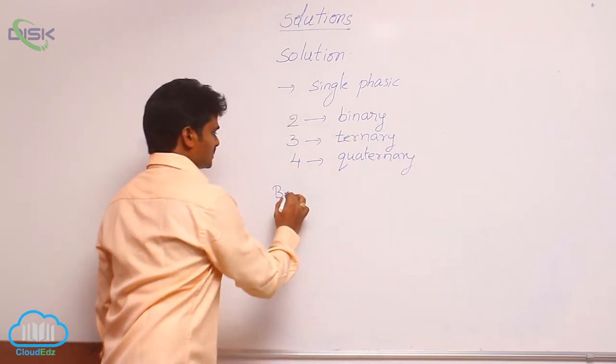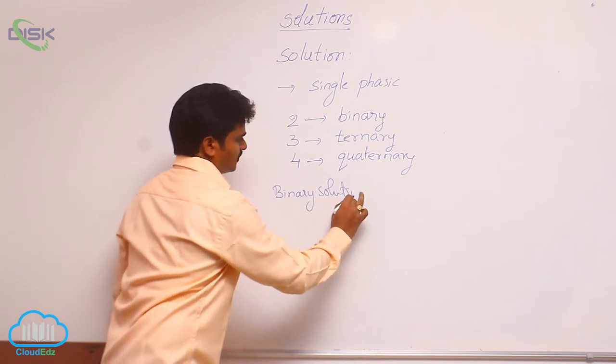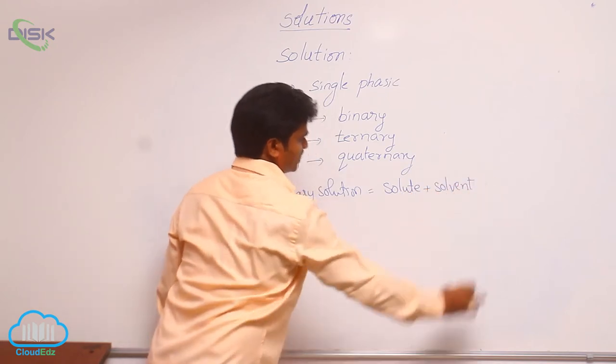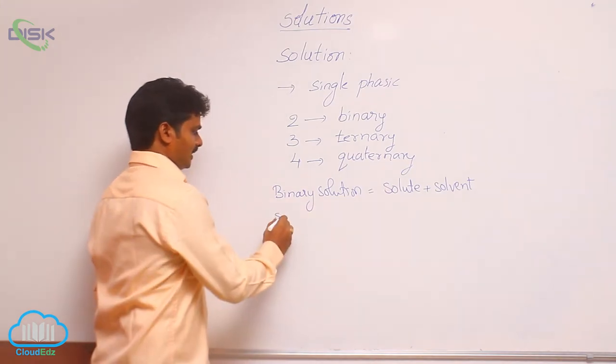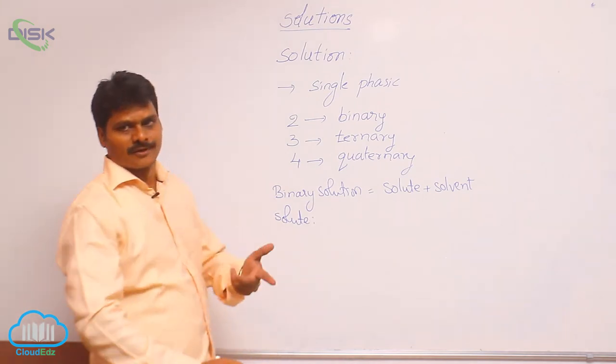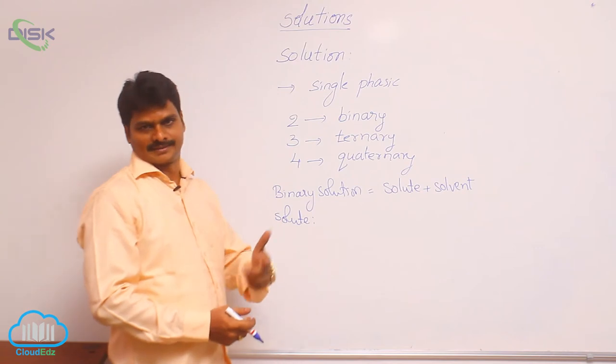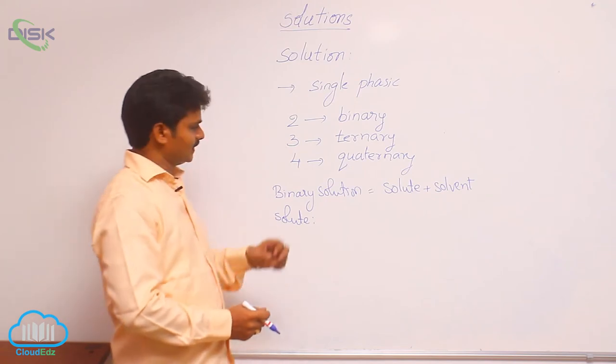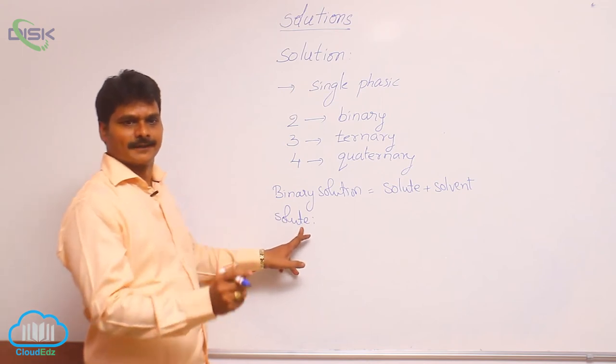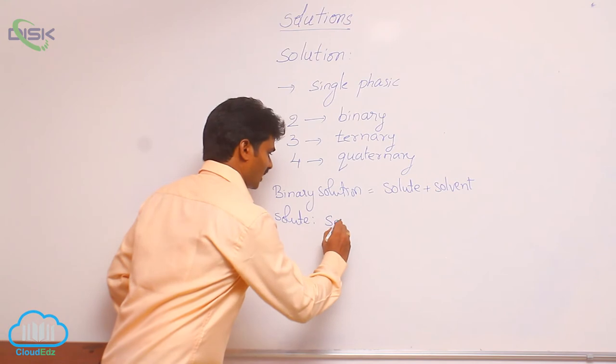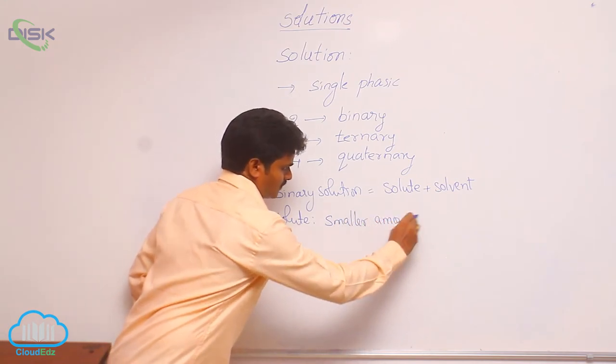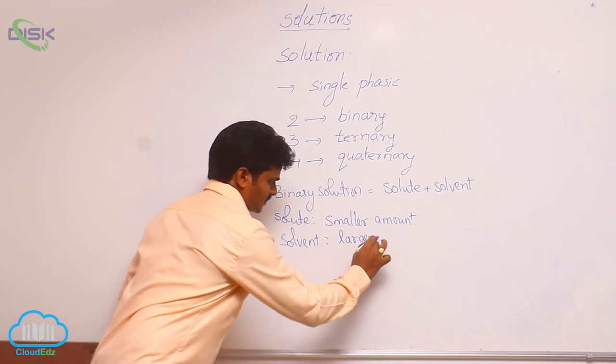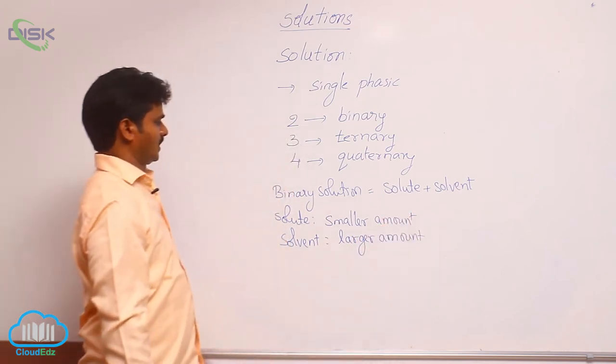A binary solution is a mixture of solute plus solvent. What is solute? If you take sugar water, sugar is solute, water is solvent. That means, the component which is present in smaller amounts is called solute, which is in larger amounts is called solvent. Solute is present in smaller amounts, whereas solvent is present in larger amounts.